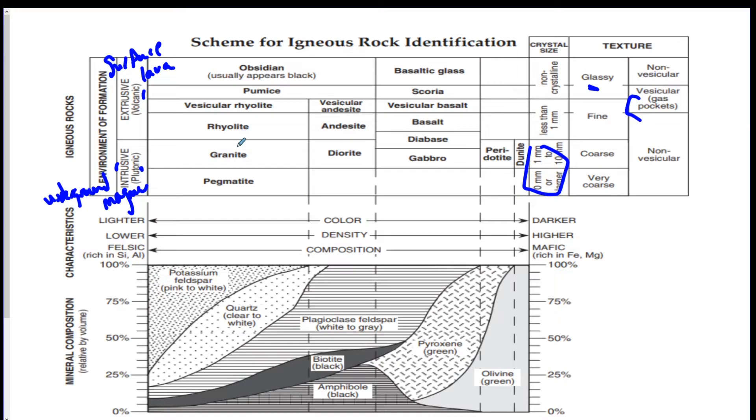All the way on the right, you're going to see a bunch of different textures. Glassy is another name for an igneous rock with no crystals, like obsidian. Vesicular means it has gas pockets. There's like little holes in the rock, because the gas bubbles pop, and then it hardens, and you get little holes all over the place. So that's texture, crystal size, and intrusive-extrusive.